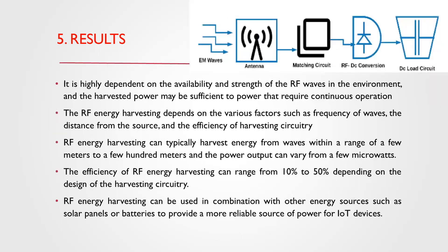RF energy harvesting is highly dependent on the availability and strength of RF waves in the environment. It depends on factors such as frequency of waves, distance from the source, and efficiency of the harvesting circuitry. It can typically harvest energy from waves within a range of a few meters to a few hundred meters, with power output varying from a few microwatts. Efficiency can range from 10% to 50% depending on the harvesting circuitry design. RF energy harvesting can be combined with other energy sources such as solar panels or batteries to provide a more reliable power source for IoT devices.